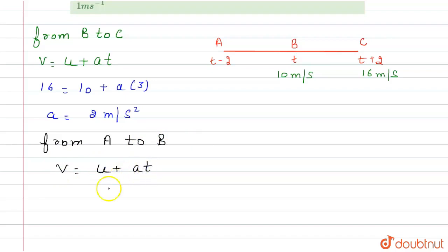Now putting the values, 10 equals u plus 2 times 2. From here we can find the value of u, which equals 6 meters per second.